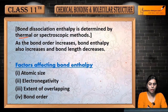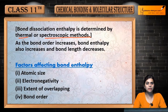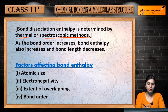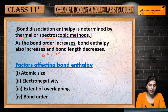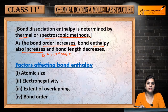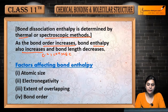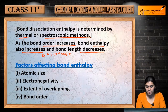Bond dissociation enthalpy is determined by thermal or spectroscopic method — aap ise thermal method se ya fir spectroscopic method se calculate kar sakte ho. As the bond order increases — matlab single bond se double bond pe ya triple bond pe aati hai — bond enthalpy also increases. Waisa waisa humari bond enthalpy bhi increase hoti hai.